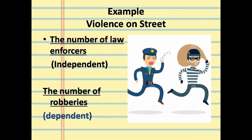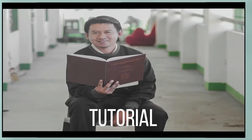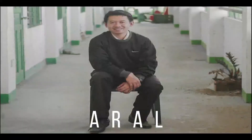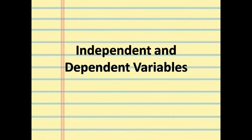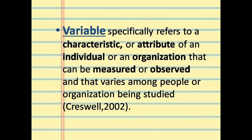Hello guys, this is teacher Ryan. Today we're going to study independent and dependent variables. An example of independent variable is the number of law enforcers, and for dependent variables, the number of robberies. Variable specifically refers to a characteristic or attribute of an individual or organization that can be measured or observed and that varies among people or organizations being studied, according to Cresswell 2002. So these are the characteristics or attributes that we measure in an individual or organization, depending on our study.